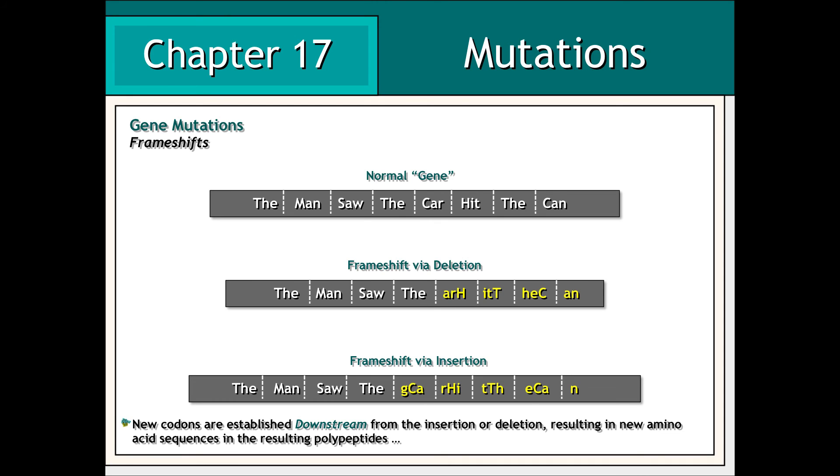Insertions occur when extra DNA is added into an existing gene. Both insertions and deletions can result in changes known as frameshifts. Within a gene, small deletions or insertions of a number of bases not divisible by 3 will result in a frameshift. The point of insertion or deletion necessitates the reorganization of the gene downstream from this change into new codons. These new codons will more than likely code for different amino acids, thus radically changing the final polypeptide product.